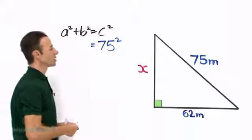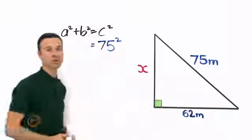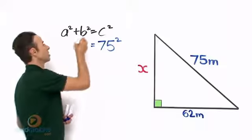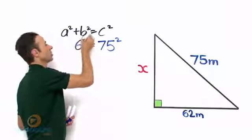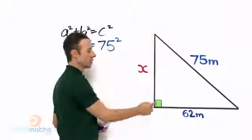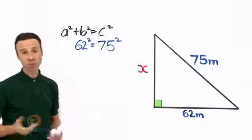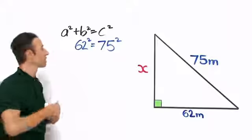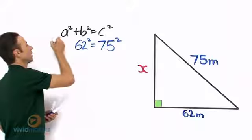Now one of the sides is already given, which is 62 right across there, so let us put that in too, so that is 62 all squared. Now the a or the other link right here connected to the right angle, we will call it x as it is labeled there, so let us just write down x squared.